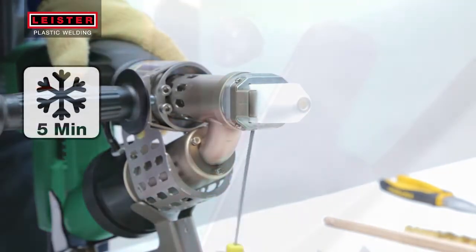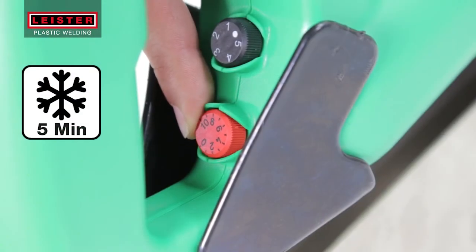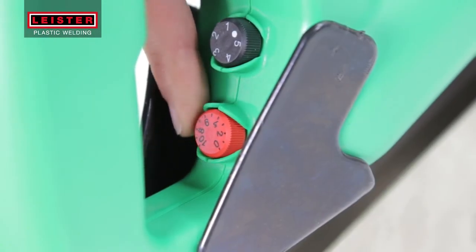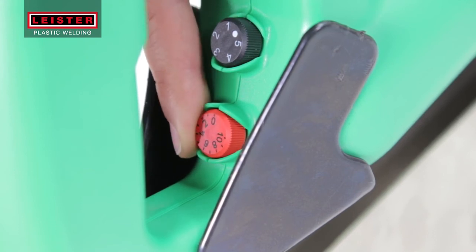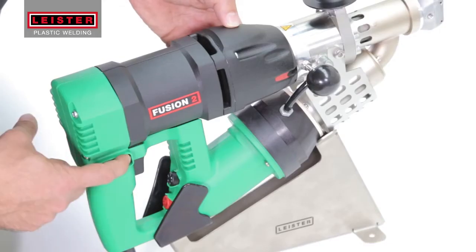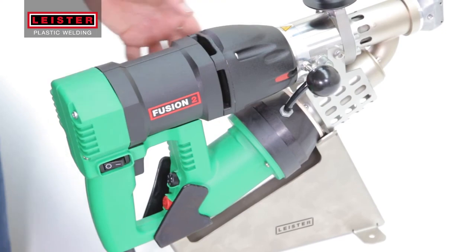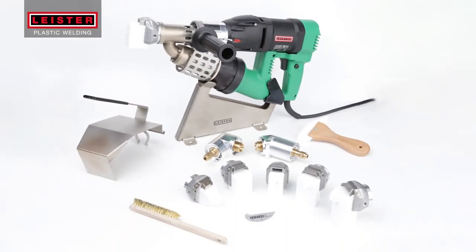Now, before switching the tool off, turn the red temperature potentiometer to the zero position and let the blower run for at least 5 minutes to allow the welder to cool down. Switch off your fusion extrusion welder and now it's ready to be stored in the case until you need it again. Thank you for using the Leister Fusion Extrusion Welder.